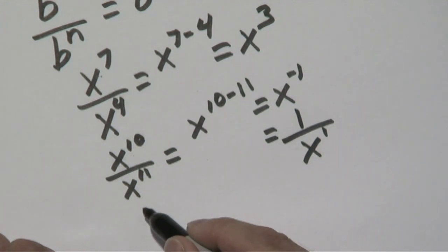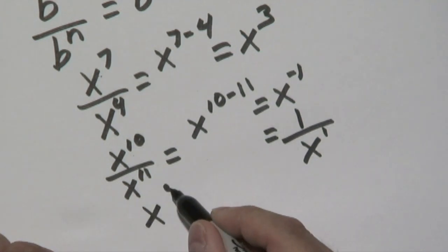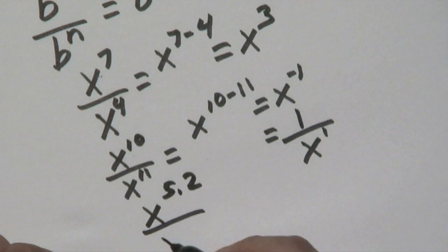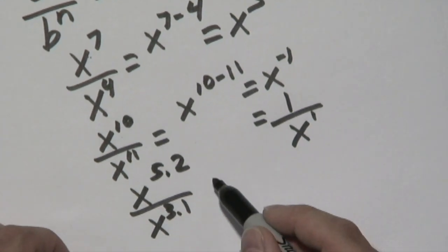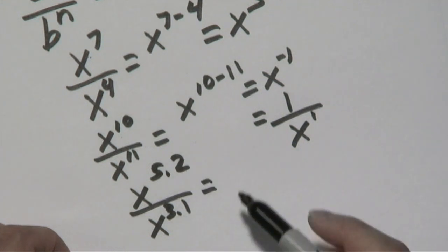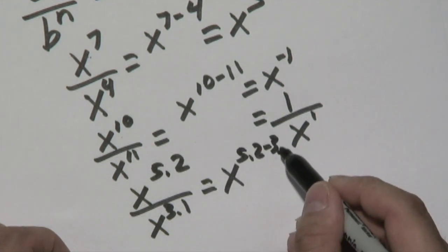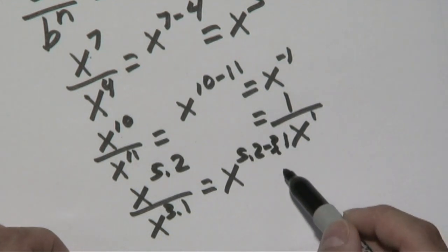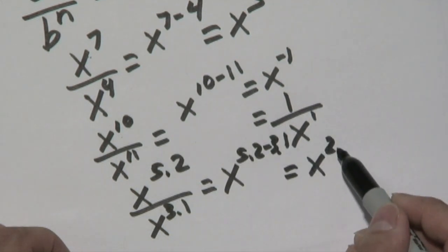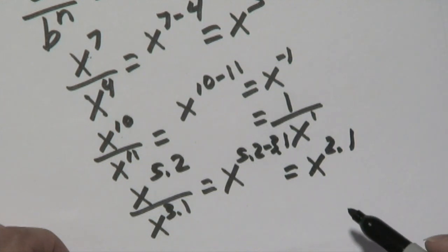And lastly, if you have something, let's just use something a little more quirky—if you have x to the 5.2 over x to the 3.1, decimals, but you still have the same idea. Go ahead and subtract the exponents. You have x to the 5.2 minus 3.1. So 5.2 minus 3.1 is going to give you 2.1. So what you have here as a result is x to the 2.1.